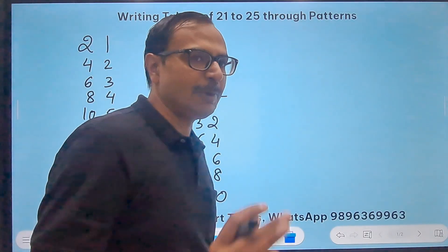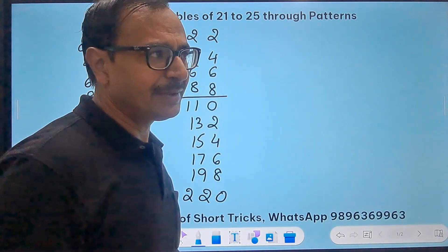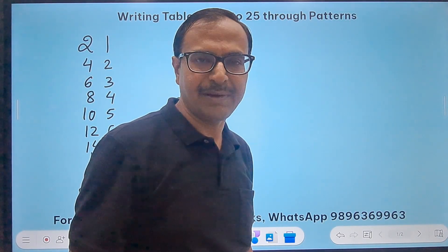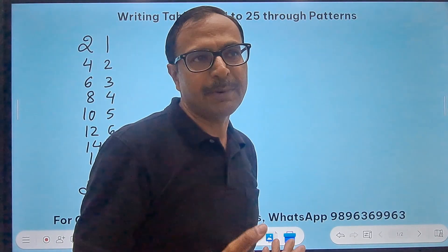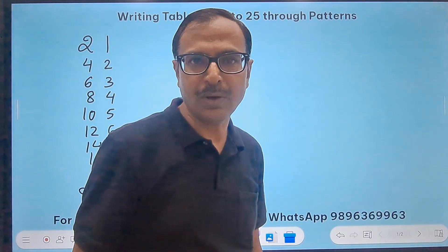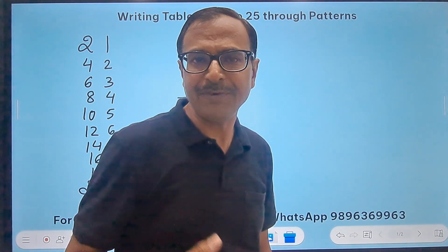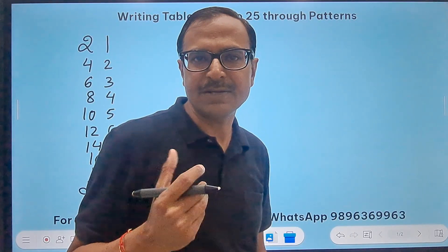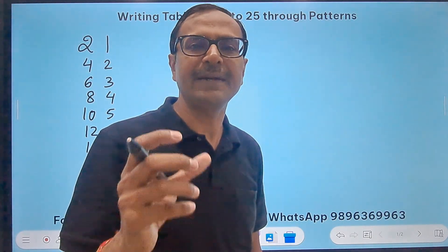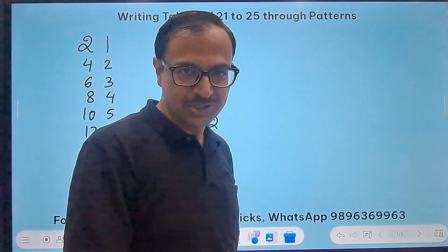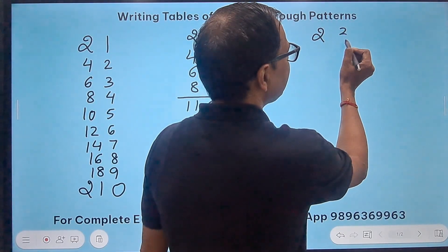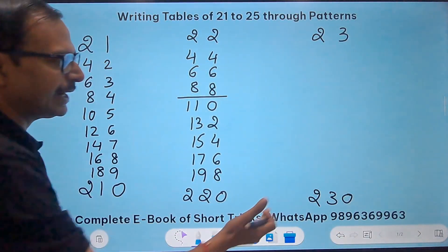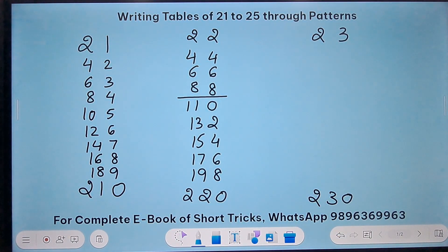That is the pattern in the table of 22. This is why we put so much pressure on students to recite tables. Even a 10th class student finds it difficult to recite the table of 26 or 17 — so how can we expect a child in second or third class to do so? We have to make the task easier for the child, and that is the intention of this video. So let's take 23, which goes from 23 up to 230.